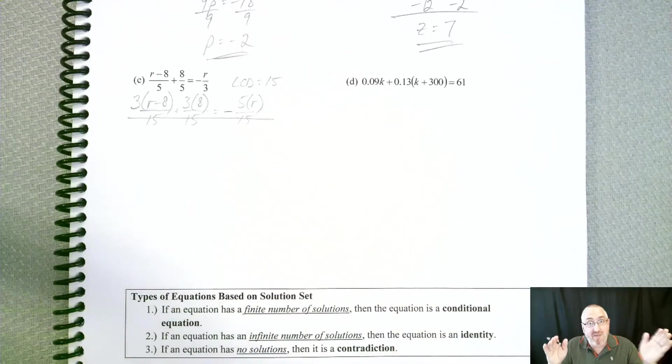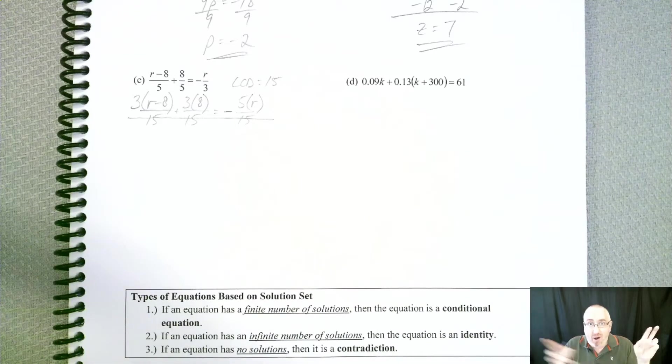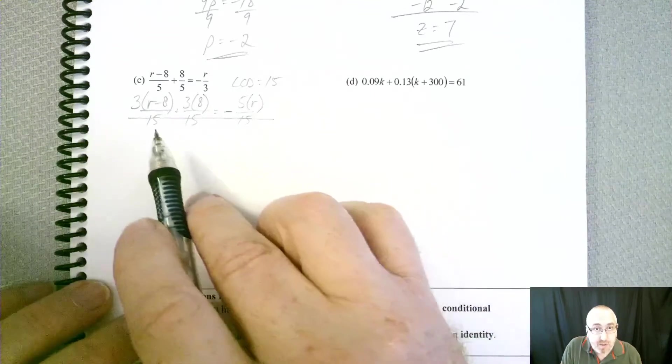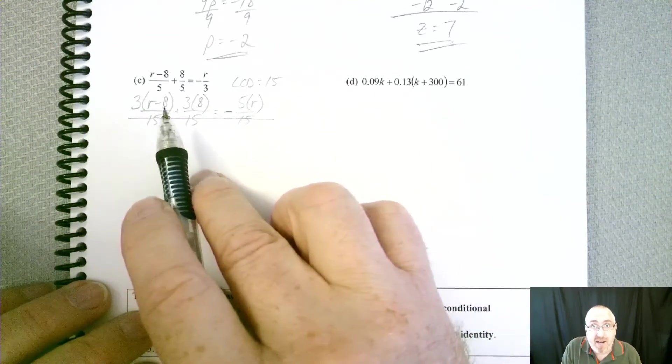Well, technically what you're doing when you cross those out is you're multiplying everything by 15. If you multiply the left side by 15 and the right side by 15, all those 15s are going to cancel each other out. So that's the nice thing about it.